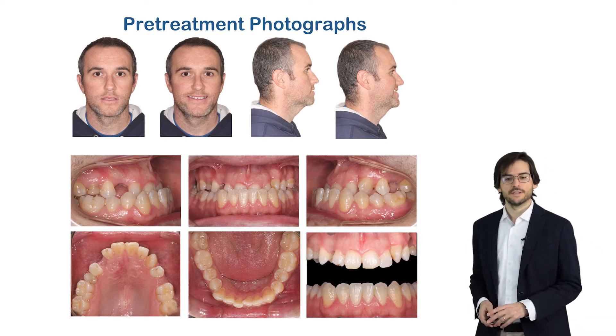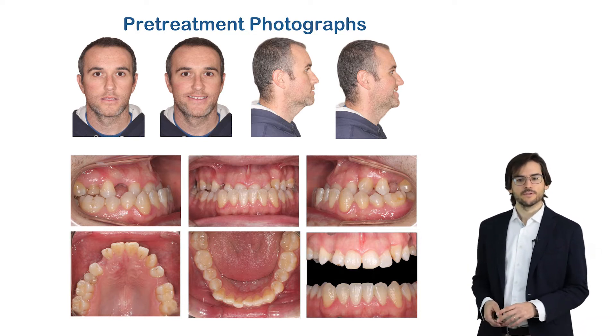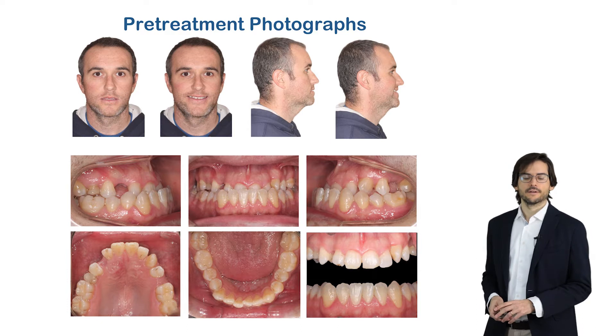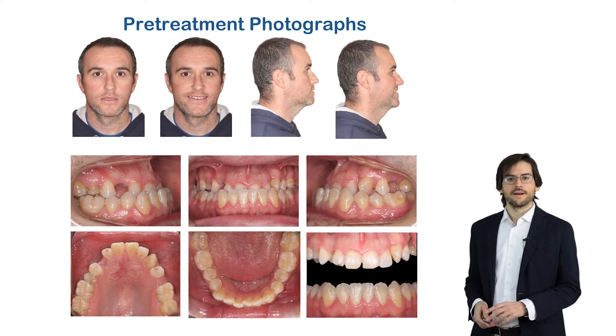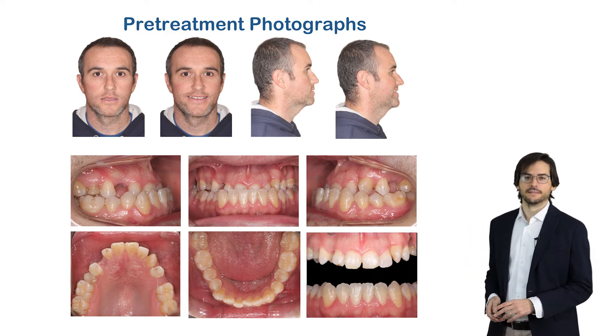Intraoral photographs showed a bilateral Class III malocclusion with a complete anterior crossbite. The maxillary right canine was palatally impacted.